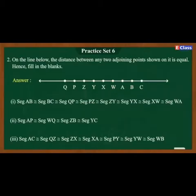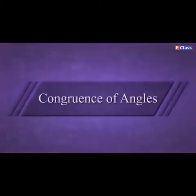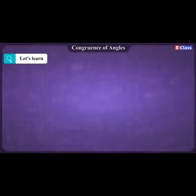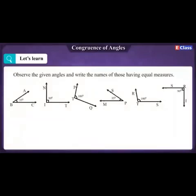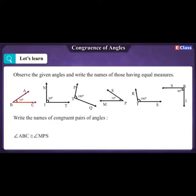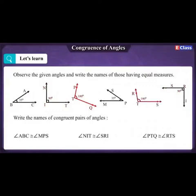You have to solve the next question as homework. Congruence of angles — let's learn. Observe the given angles and write the names of those having equal measures. Write the names of congruent pairs of angles: Angle ABC is congruent to angle MPS. Angle NIT is congruent to angle SRI. Angle PTQ is congruent to angle RTS.